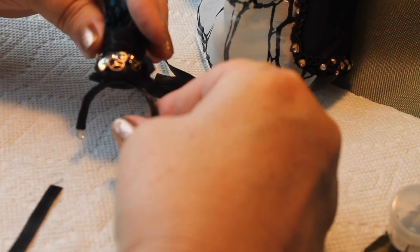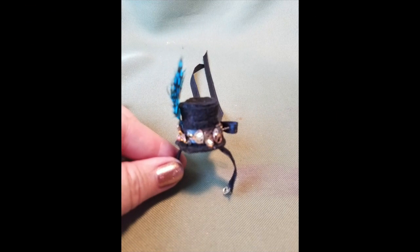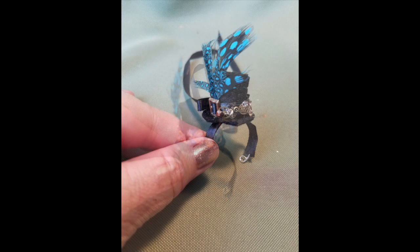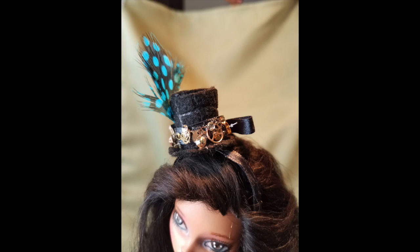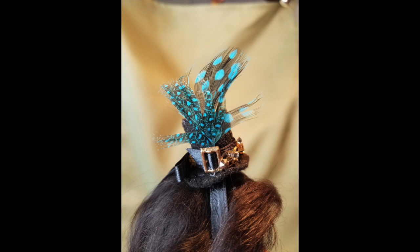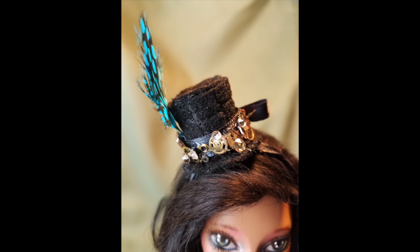And now we're ready to place it on the headband. We're putting that sort of off to the center side so that it will sit at an angle on the head as fascinators tend to do. And that's how it looks. Here's one of my Monster High repaints as a model to show you how it would look on a doll. There's the side with that buckle and the back with the bow. So there's our Steampunk fascinator.